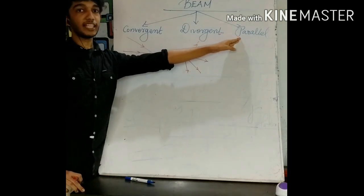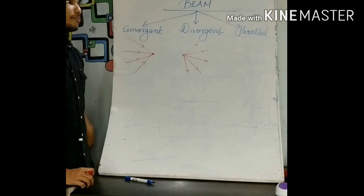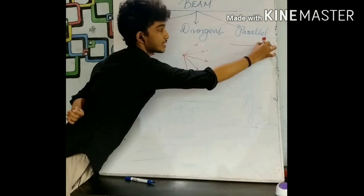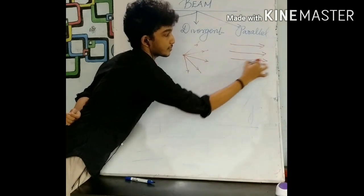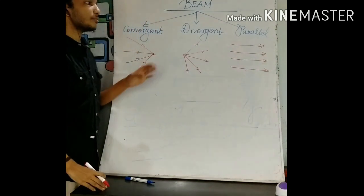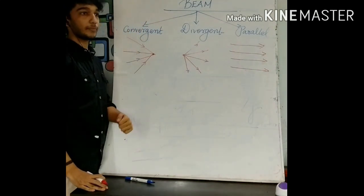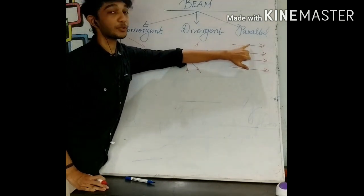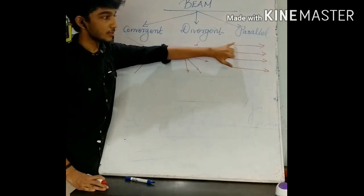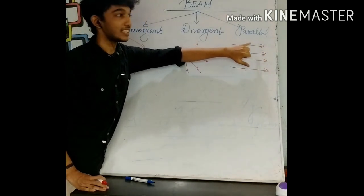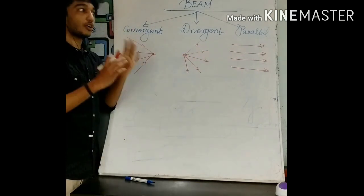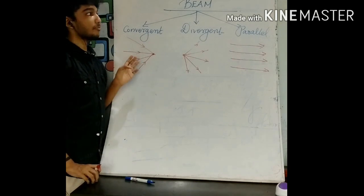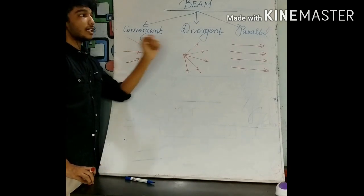The third classification is parallel beam of light. In the case of a parallel beam of light, the rays of light will be parallel to each other. There is no change in the width of the beam as the rays proceed forward. This is about the classification of beams: convergent, divergent, and parallel.